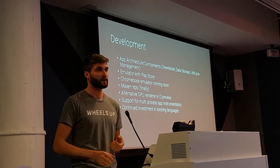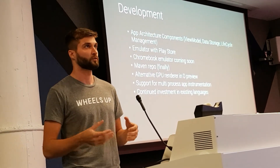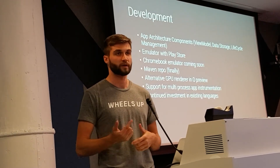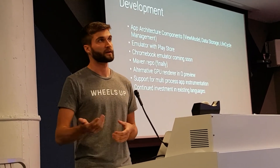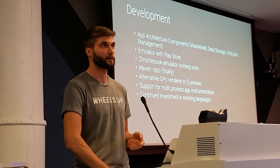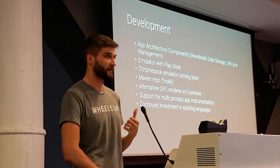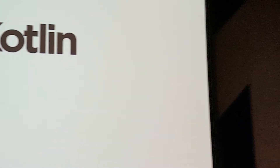For those of you that use Espresso, they now support multi-process app instrumentation. You need Android O and the latest version of Espresso, but you'll be able to instrument between your app processes if you have multi-process in a single app. They had continued investment in existing languages — Java 8 features, C and C++ improvements. And the big one everyone was raving about: after a very long time, Kotlin is now officially supported — Google is promising not to break it. GDG North Jersey is going to be having a Kotlin meetup fairly shortly.